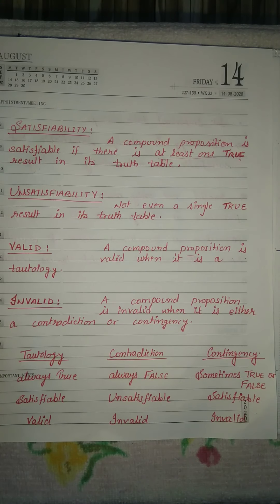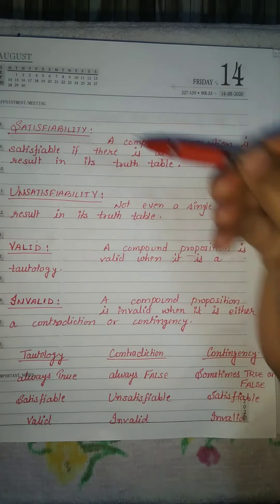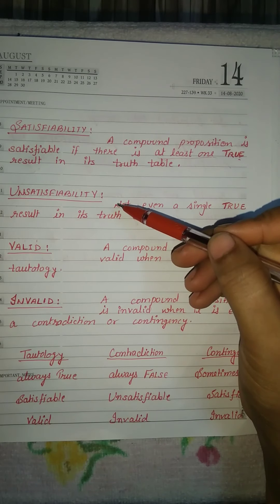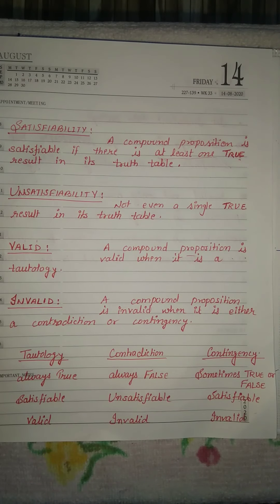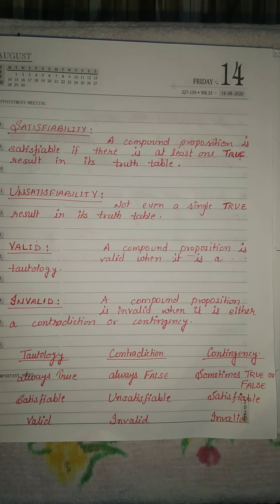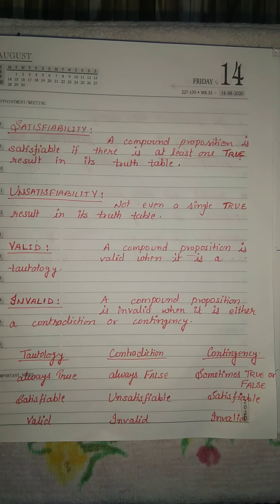Welcome children. Today we will discuss about these terms: satisfiability, unsatisfiability, valid, and invalid. These are the important terms in propositions. The first term is satisfiability.